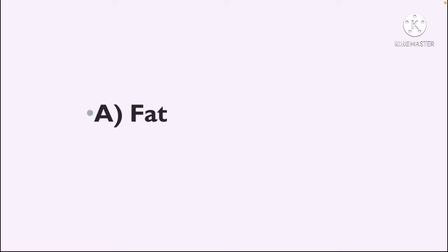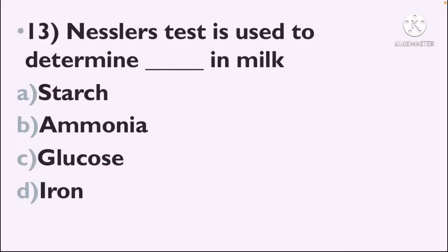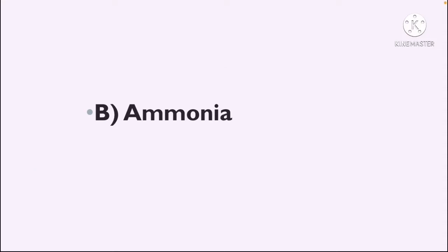Next question: Nessler's test is used to determine what in milk — Option A: Starch, Option B: Ammonia, Option C: Glucose, Option D: Iron. The correct answer is Option B, Ammonia — Nessler's test is used to test ammonia in milk.